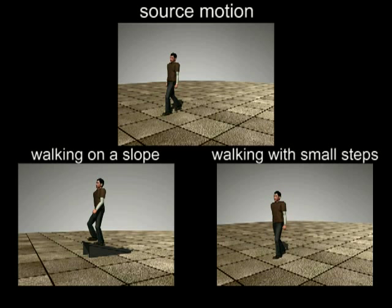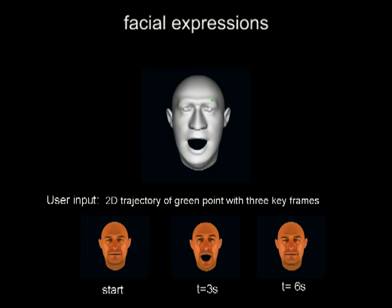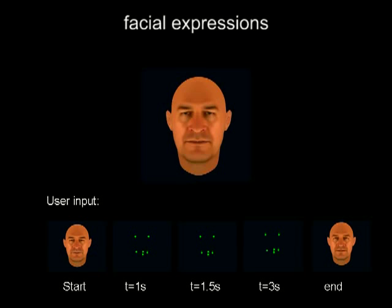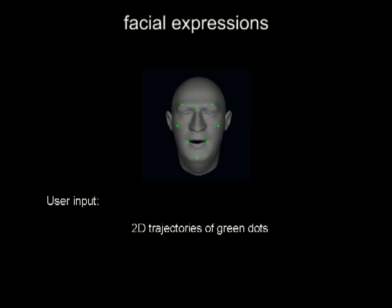The same algorithm can also be applied to generate facial animation from user-defined constraints. Result from three keyframes and one key trajectory. Result from a sparse set of position constraints on a 2D screen space. Result from key trajectory constraints.